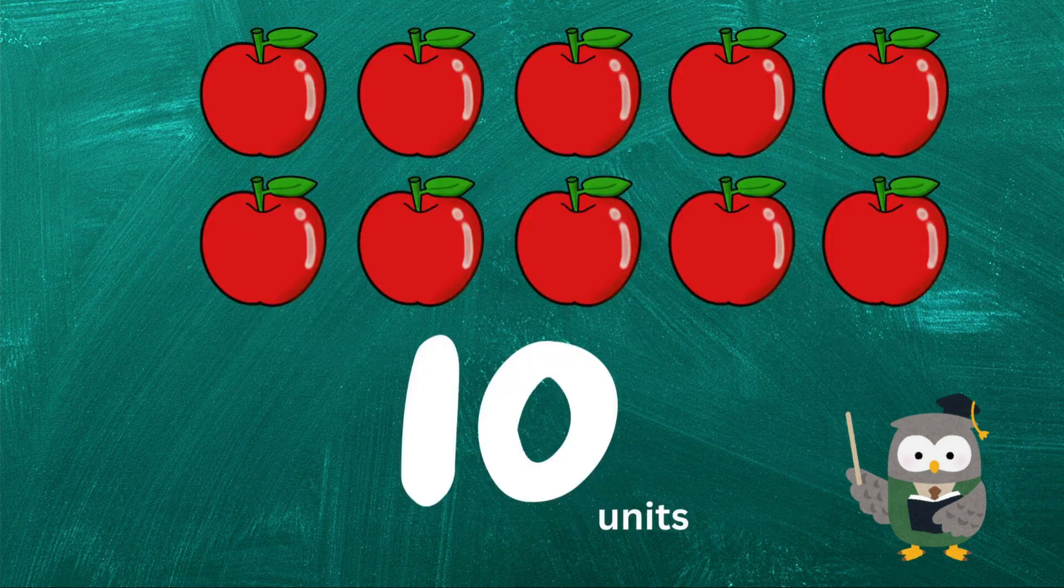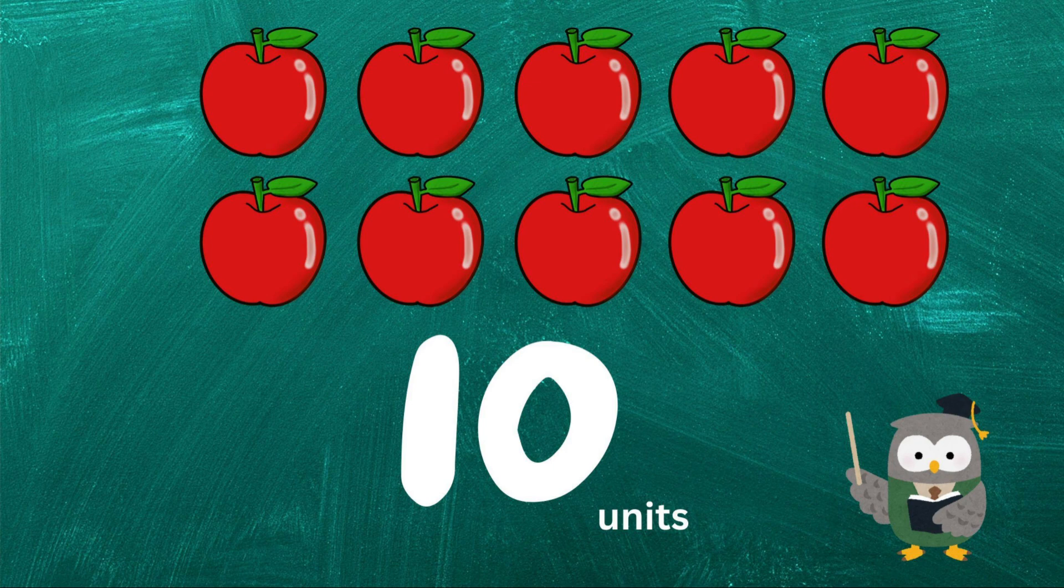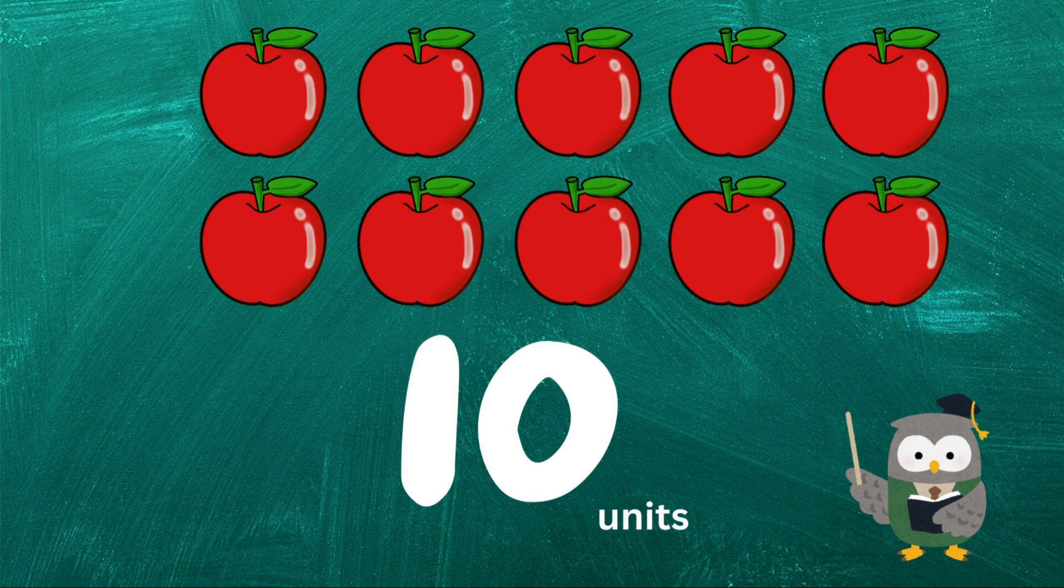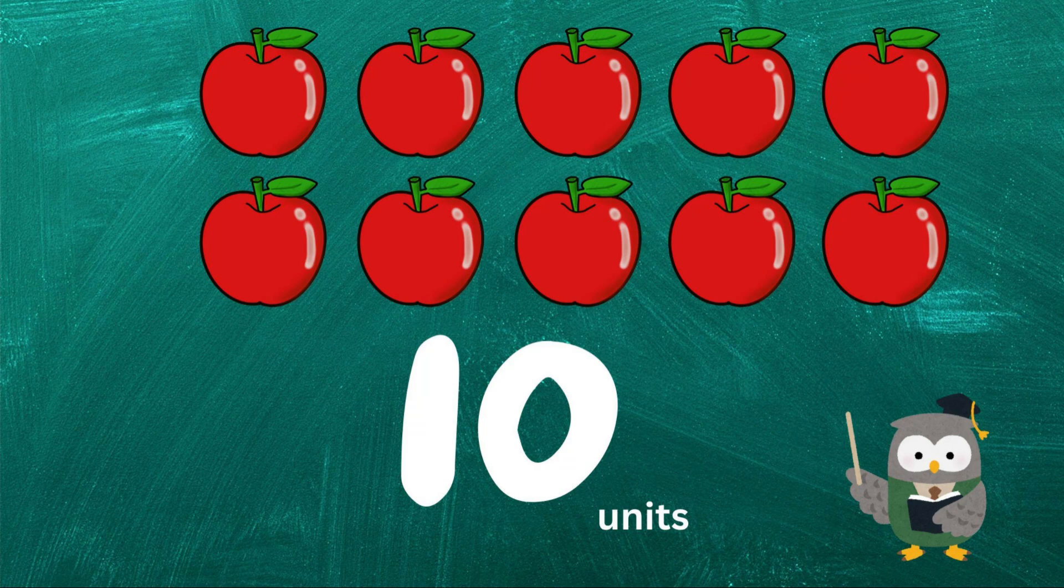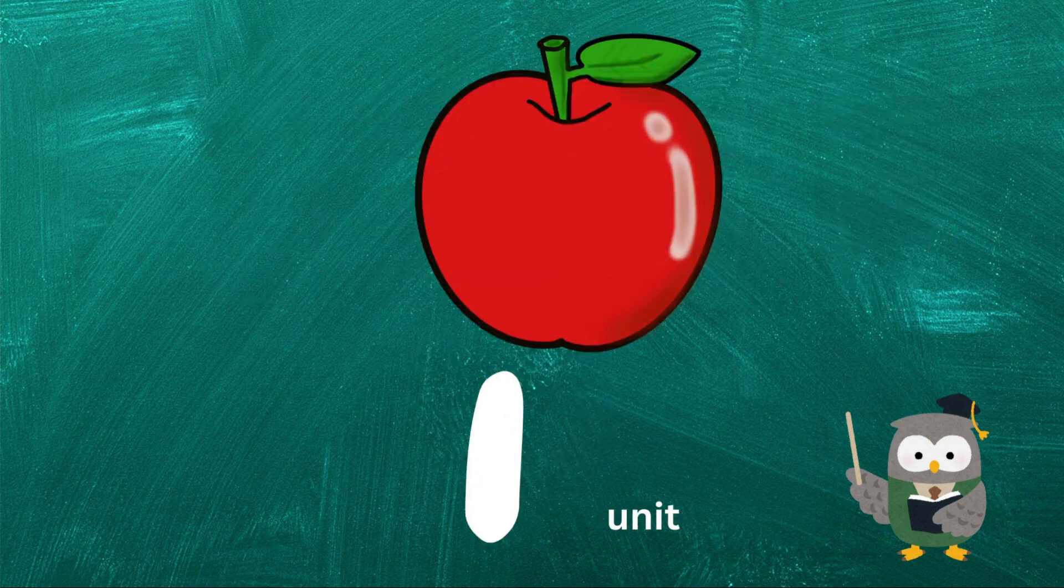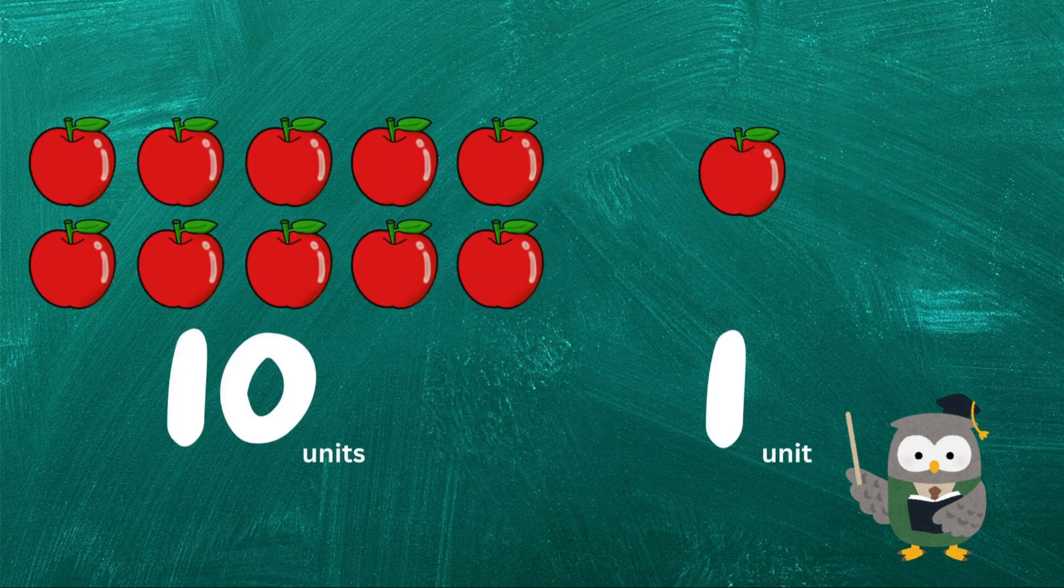Think about the number ten. It isn't just a one and a zero, it's actually one ten. That zero plays a very special role. It tells us that we have no units left over, and that our one is in the tens place, not the ones place. If we didn't have the zero, we wouldn't know that this one represents ten. We'd just see it as one. The zero is like a superhero sidekick, giving our numbers power and position.